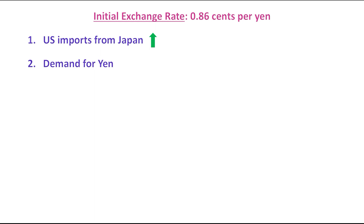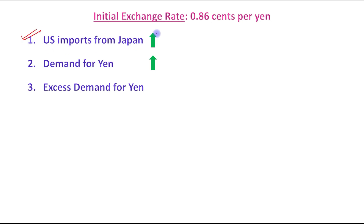Now, the demand for Japanese currency, that means the demand for yen, will be increased. So it will create a situation of excess demand for yen. Earlier, the equilibrium exchange rate was maintained. So the first point is: U.S. imports from Japan increase, demand for yen increases, and it creates a situation of excess demand for yen.